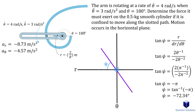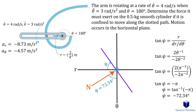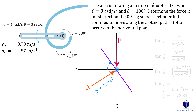We got a negative value, which means we're going opposite to the positive sense of theta. The normal force is always perpendicular to the tangent line. If you look carefully, the angle between the transverse line and the normal force equals the angle between the radial line and the tangent line. If you extend the normal force upwards, you can see how this angle is the same. Let's draw the force applied to the can as well, which completes our free body diagram.